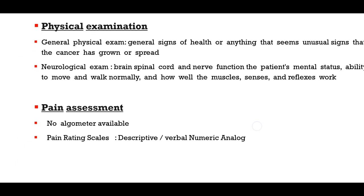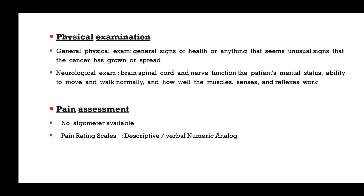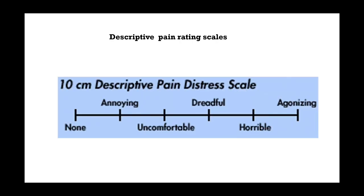For pain assessment, there are many tools available: descriptive, verbal, numeric, and analog scales. Examples include descriptive pain rating scales ranging from no pain to worst possible pain, with intermediate levels of mild, moderate, severe, and very severe pain. There is also a 10 cm descriptive pain stress scale using terms such as annoying, uncomfortable, dreadful, horrible, or agonizing. A verbal pain scale uses mild, moderate, and severe categories.